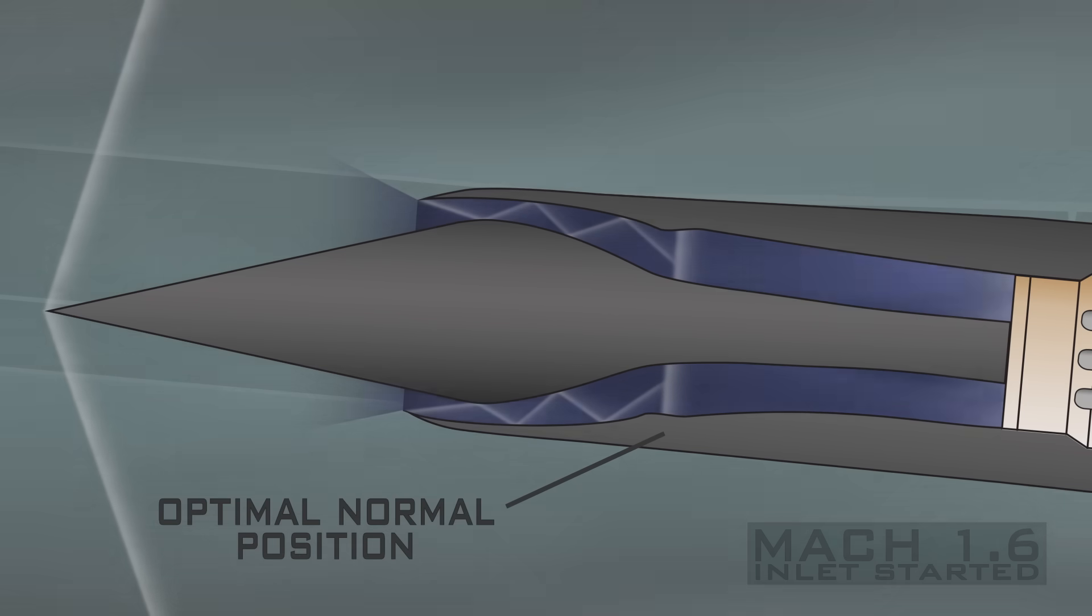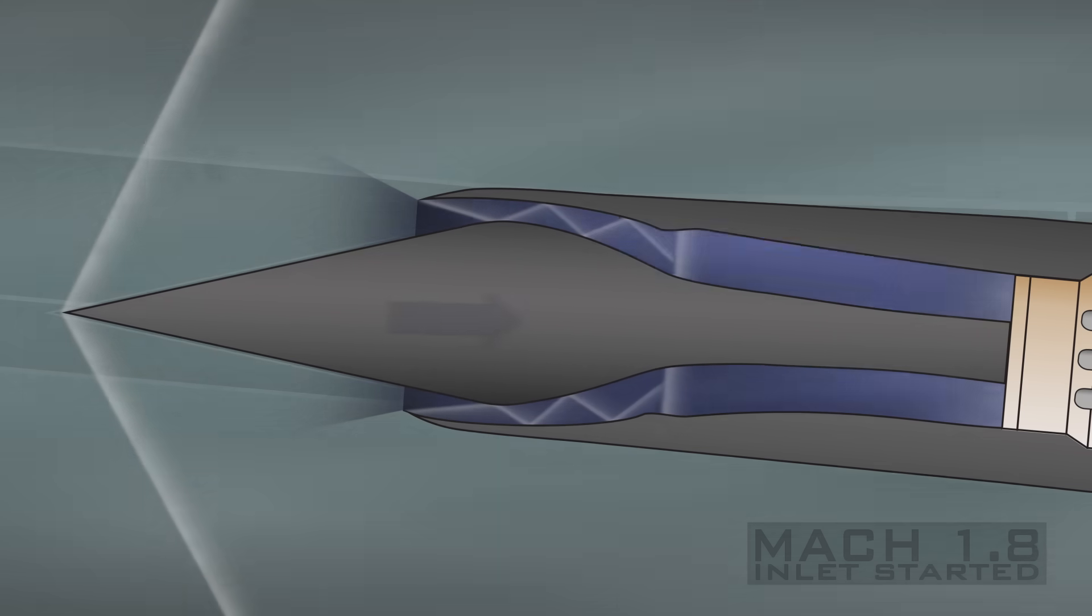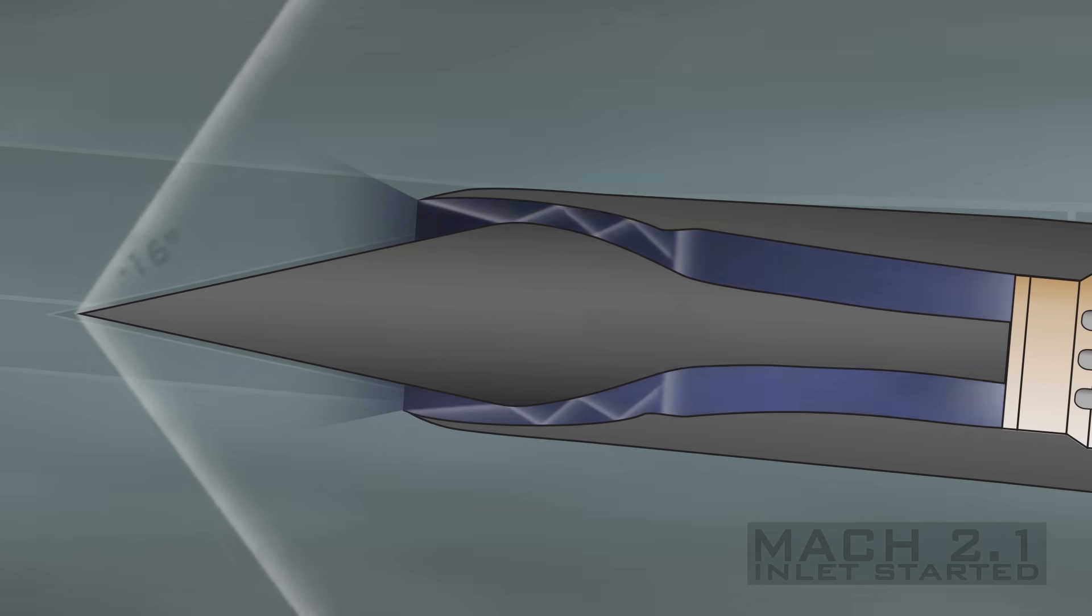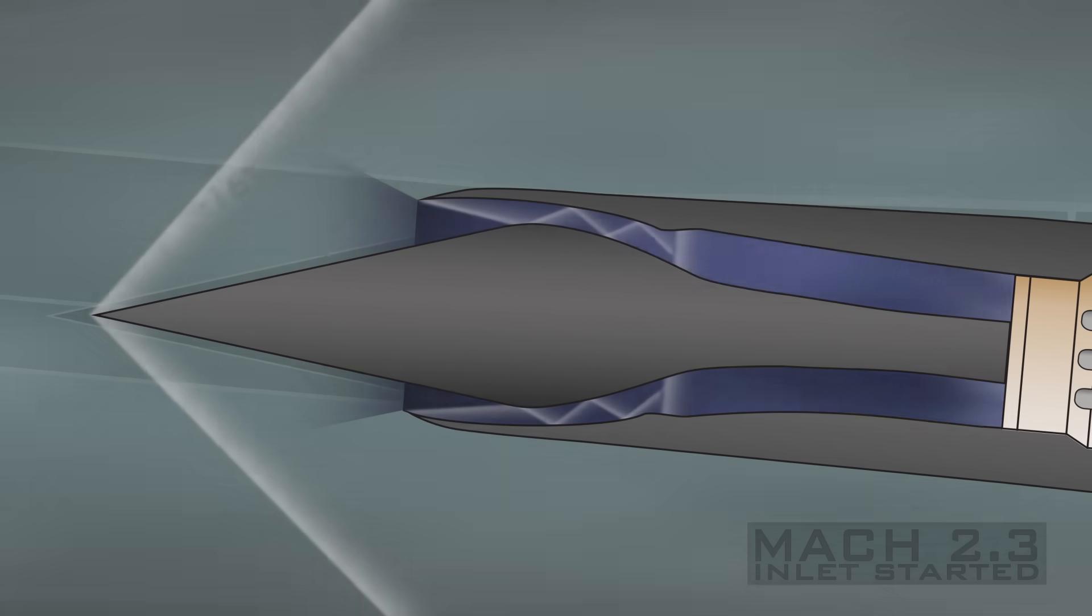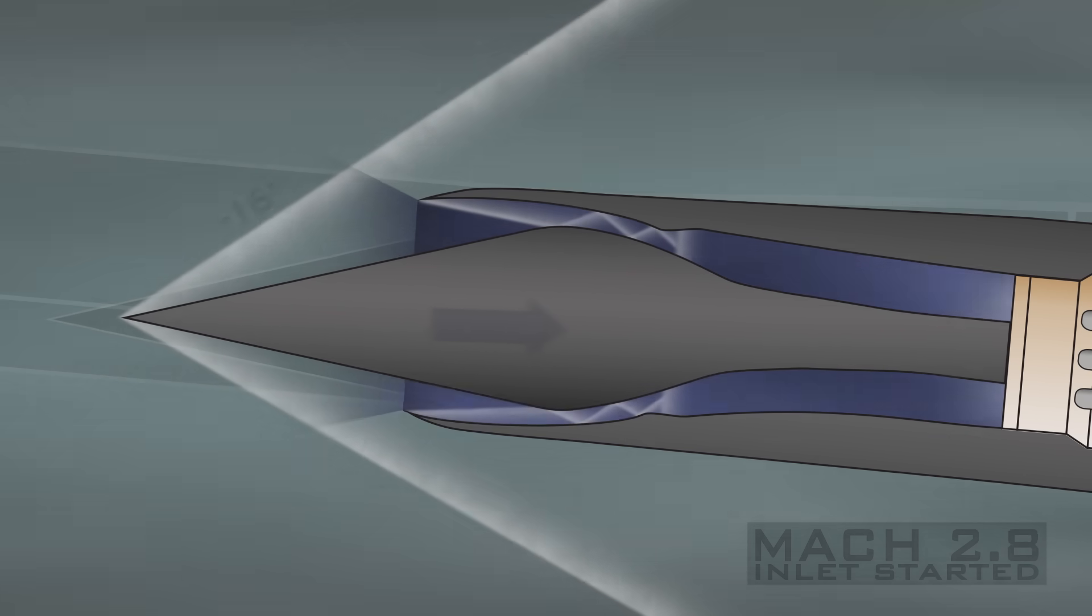So to keep the normal in the optimal position for pressure recovery, the spike retracts 1.6 inches for each 0.1 increase in Mach number above Mach 1.6. This changes the relative geometry of the inlet, keeping the normal at the optimal position.